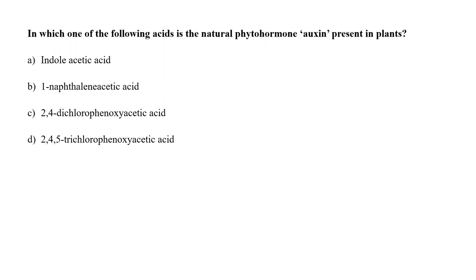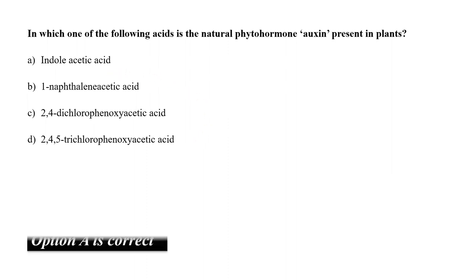Which one of the following acids is the natural phytohormone auxin present in plants? A. Indoleacetic acid, B. 1-naphthalene acetic acid, C. 2,4-dichlorophenoxyacetic acid, or D. 2,4,5-trichlorophenoxyacetic acid? Options B, C and D are synthetic auxins. Indoleacetic acid is the natural auxin. So the correct answer is option A.